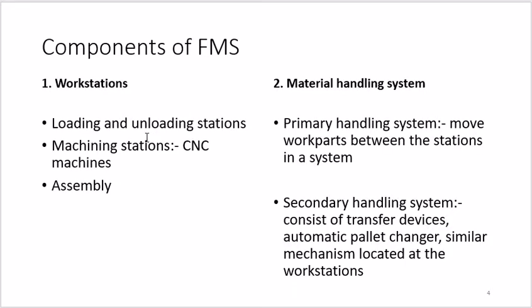Starting with the first component: workstations. Workstations are your actual machines on which production is going on, such as machining stations or CNC machines. In FMS, workstations would definitely be CNC machines or, if more advanced, DNC — but not any conventional machine. The first component of FMS is the workstation, which is completely automated. There are also loading and unloading stations where parts are loaded and unloaded automatically.